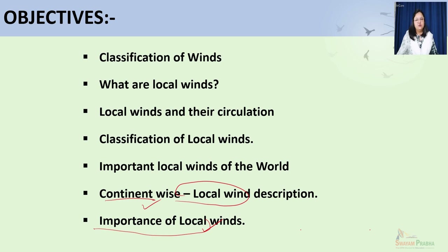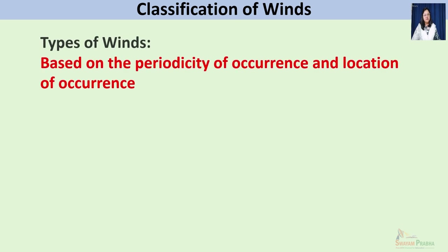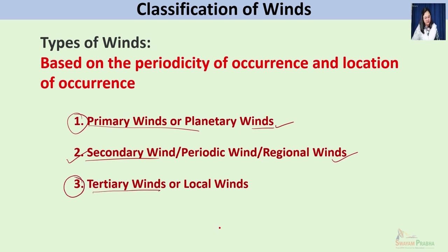Starting with the classification of winds: there are primarily three types of wind circulation. The first is the primary wind circulation or planetary wind circulation, which we've already discussed. The second is secondary wind circulation, also called periodic winds or regional winds, which we have also discussed in detail. Today we will focus on the third type — tertiary winds for local wind circulation.